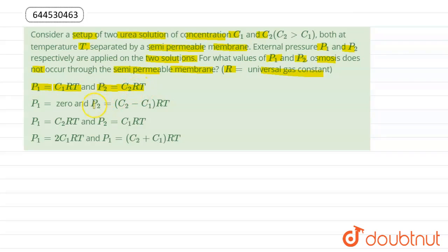Option A: P1 = C1RT and P2 = C2RT. Option B: P1 = 0 and P2 = (C2 - C1)RT. Option C: P1 = C2RT and P2 = C1RT. Option D: P1 = 2C1RT and P2 = (C1 + C2)RT.